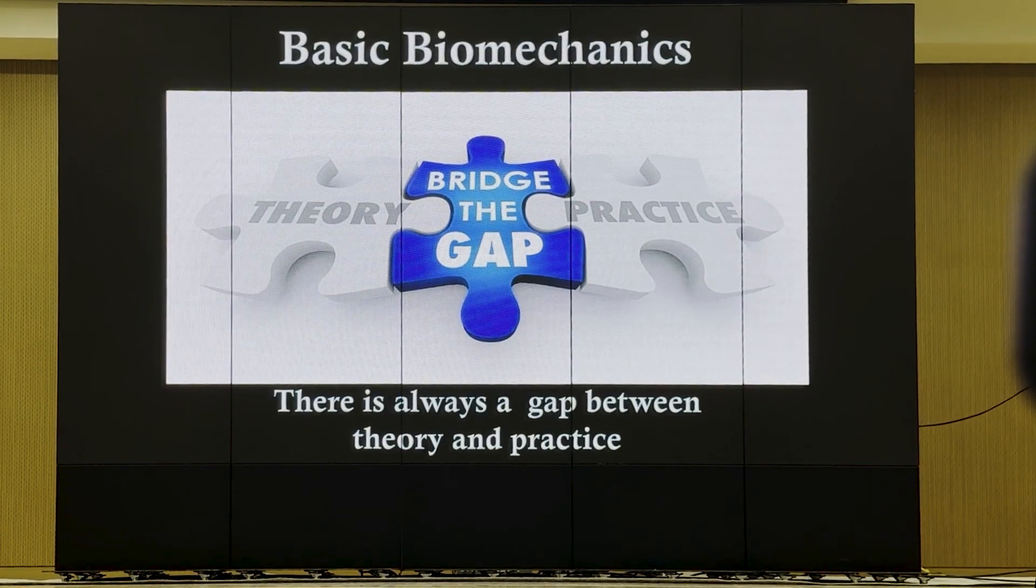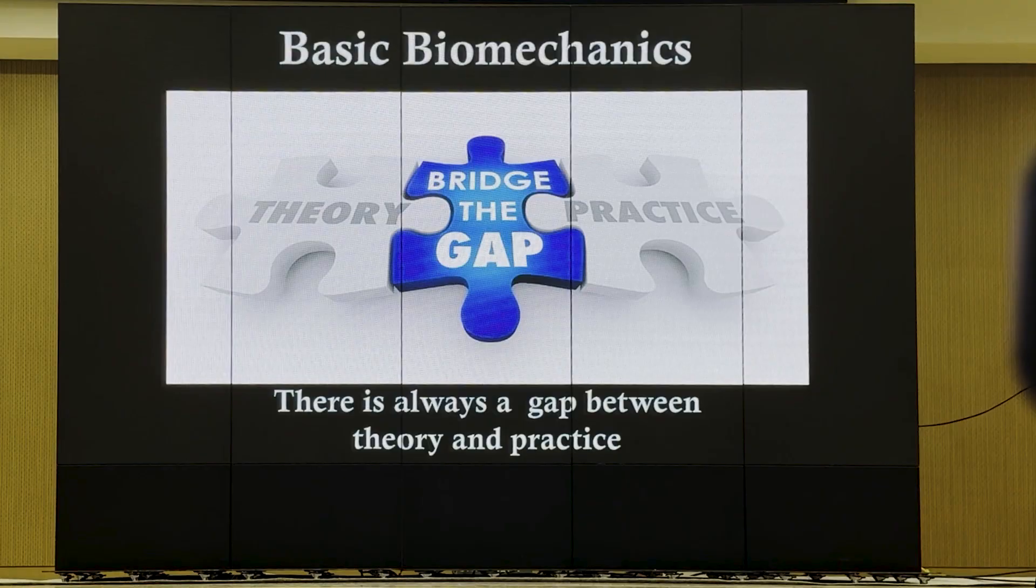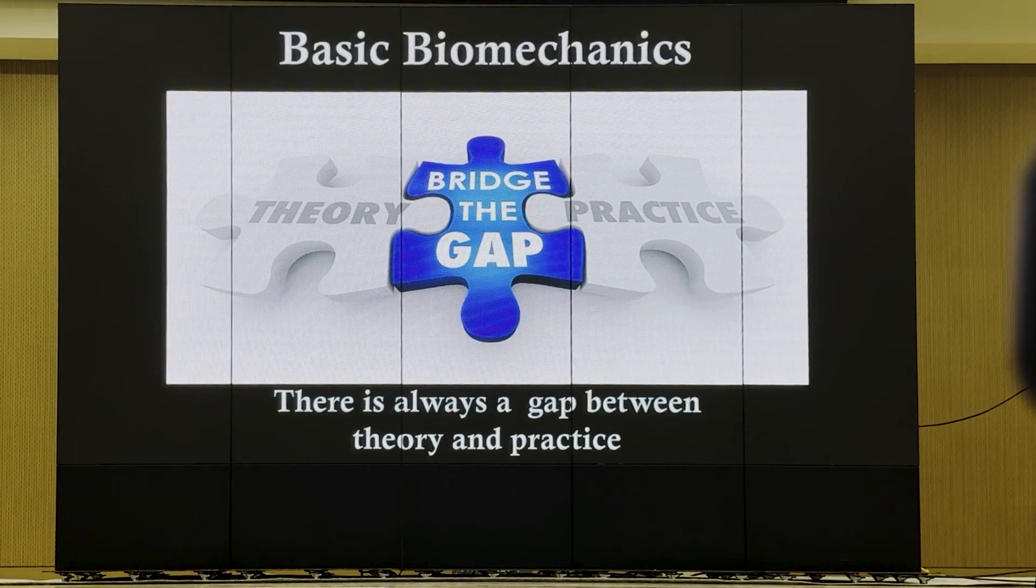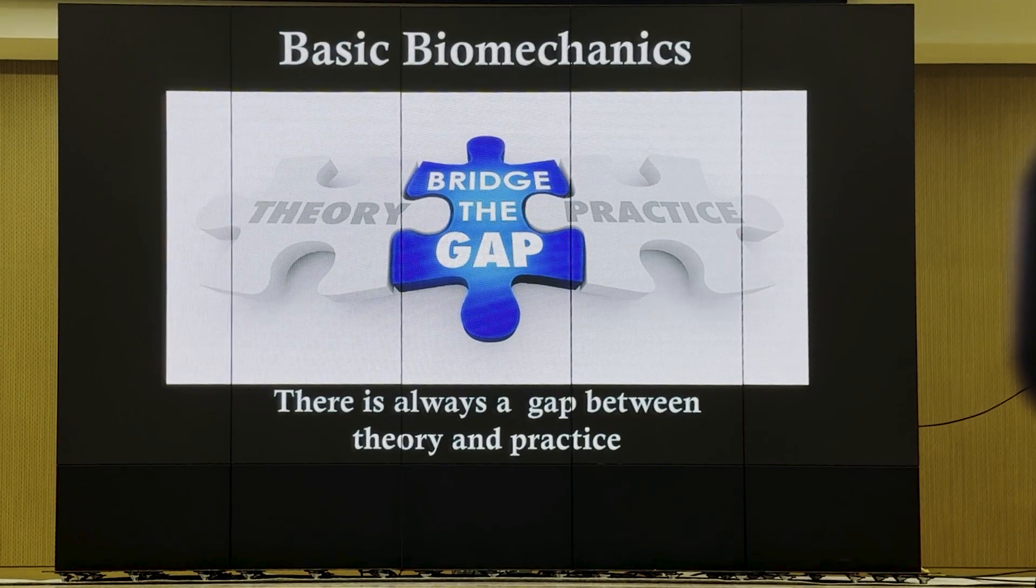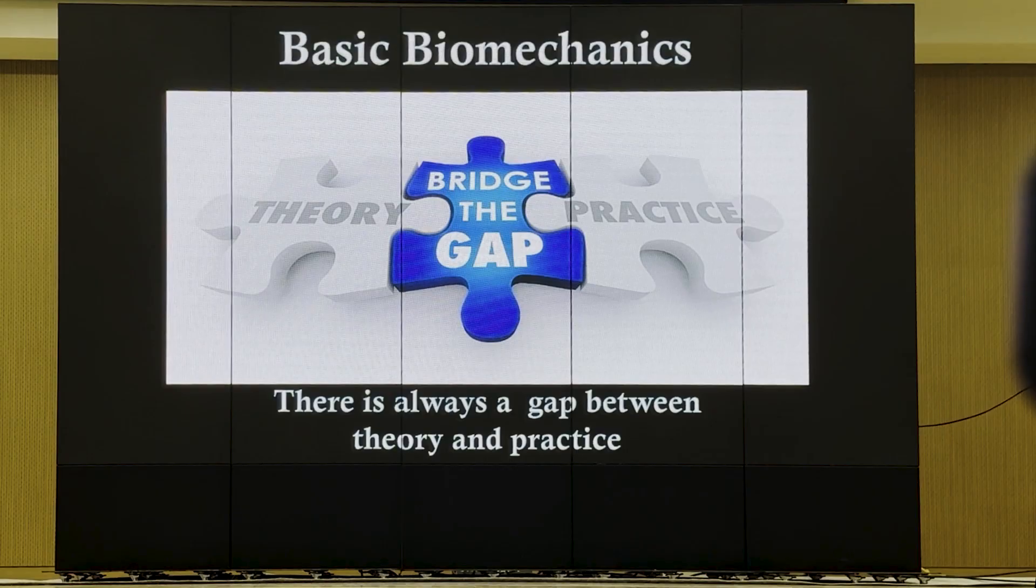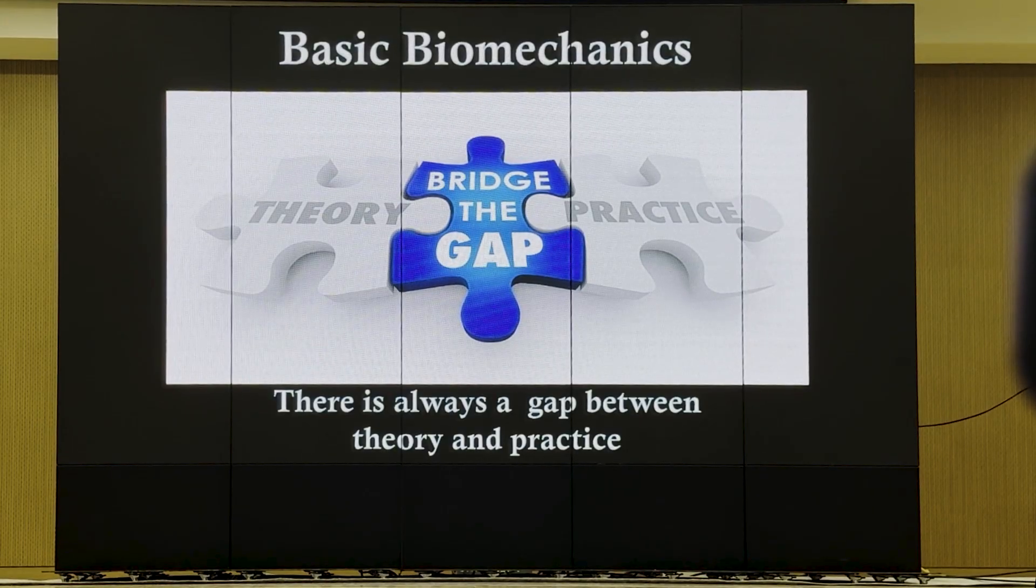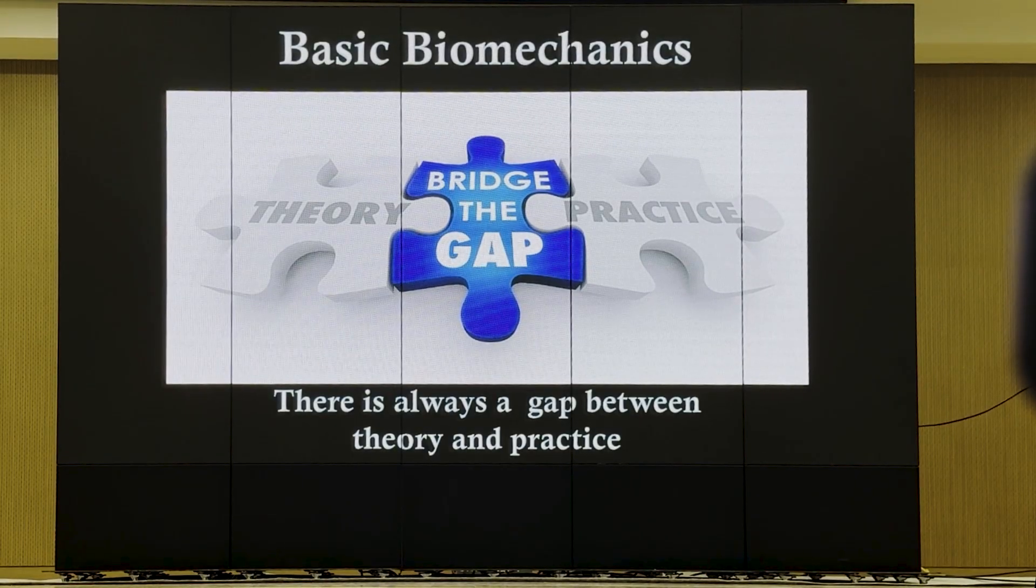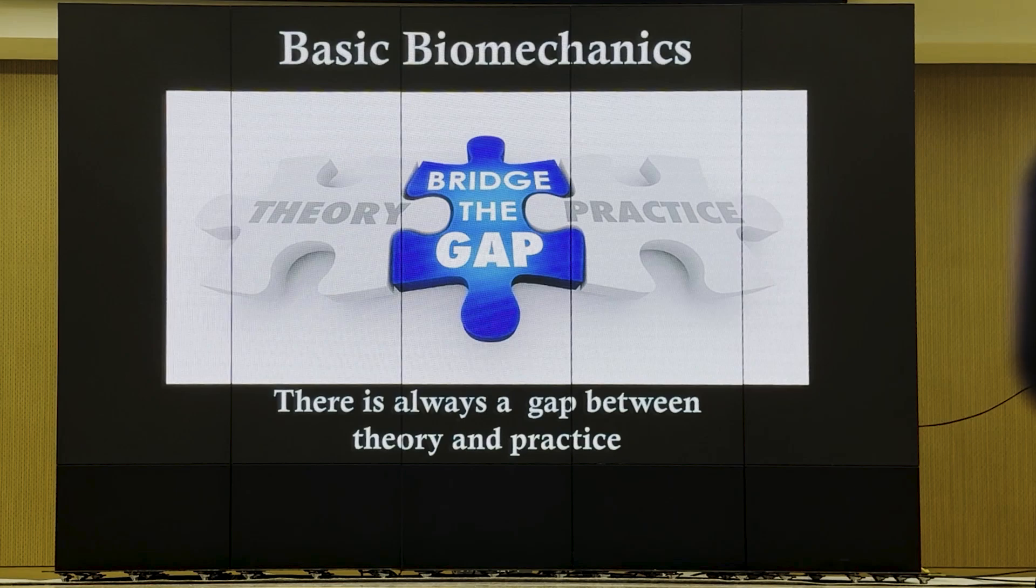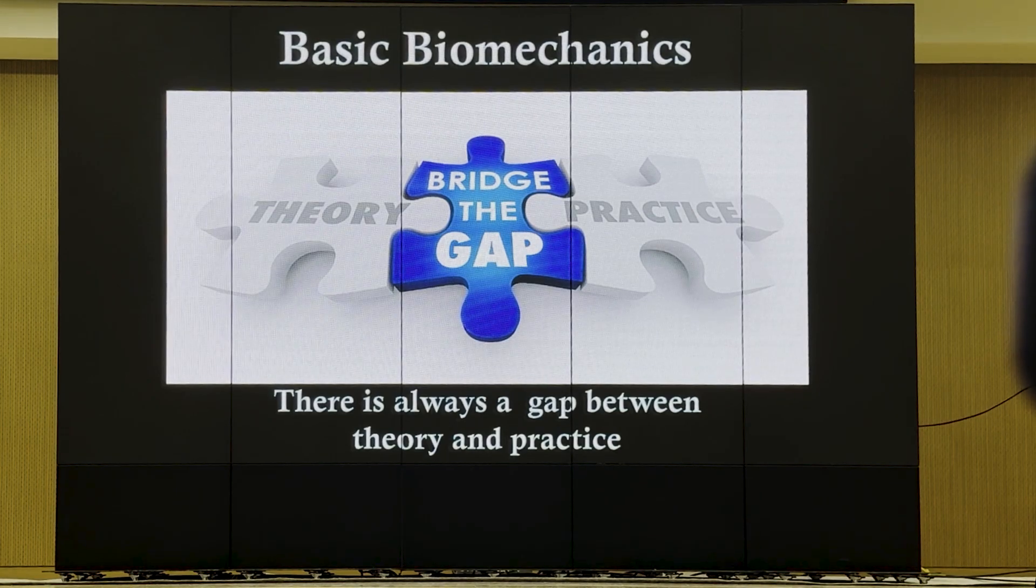It is true in human beings too. As we are dealing with biologic human beings, biologic objects have so many variables. That means individual variation. So it is very difficult to predict, even if we exactly analyze the forces.